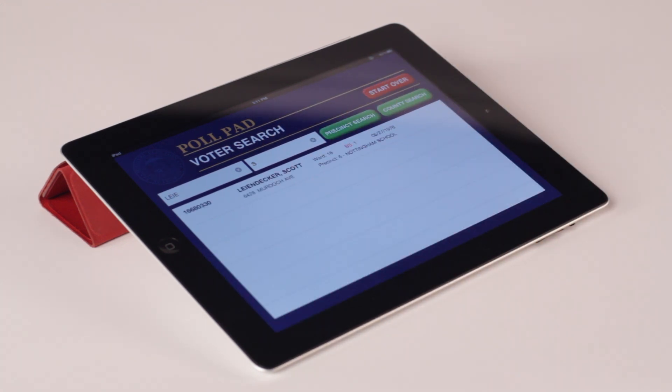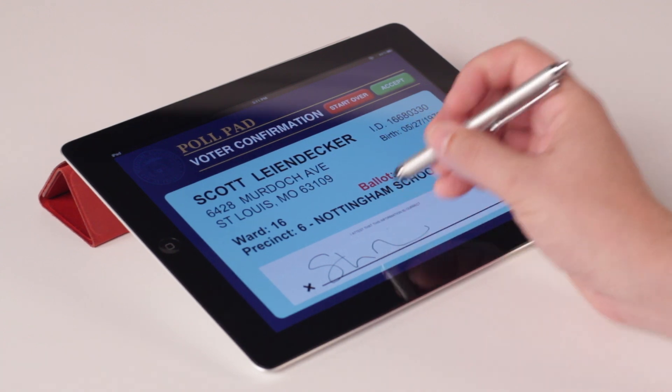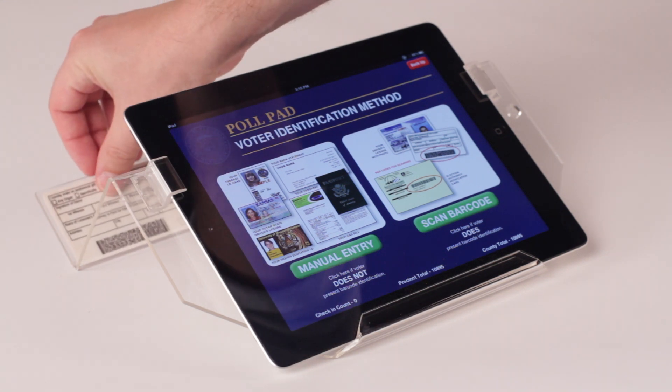By design, our Poll Pad is tablet-based. This makes it easy to set up, integrate with, and train on. It processes voters quickly and reports voter history accurately within seconds.